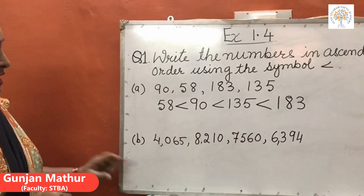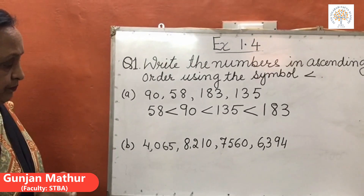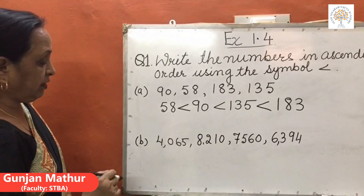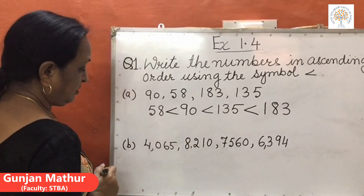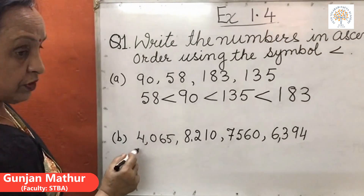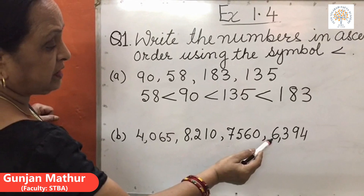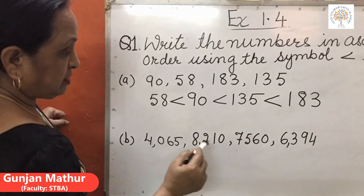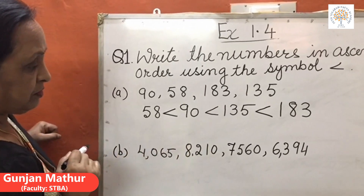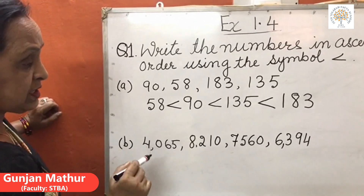Let us see the next example. In this example, we have been given four 4-digit numbers. When we compare them, we compare from the first digit of all four numbers. The first digit of the first number is 4, second number is 8, third number is 7, and the fourth number is 6. Since 4 is smaller than all the other given numbers, 4,065 is the smallest among all these numbers. So first we write 4,065 and put the less than sign.